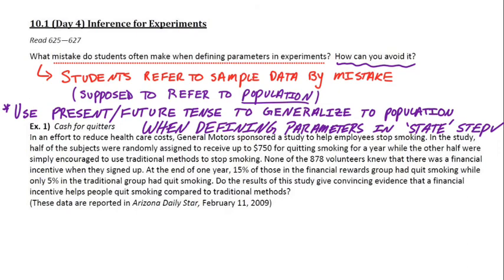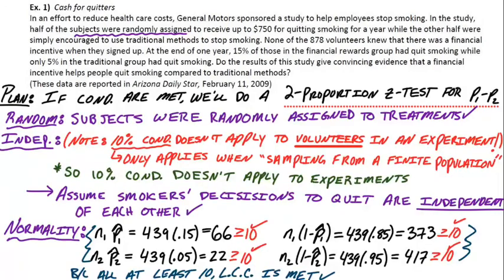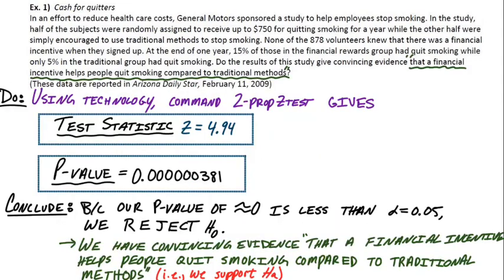Just remember that for experiments, when defining parameters at the beginning, use present or future tense to talk about population parameters and generalize to the population. Don't use past tense because then you're automatically referring to the sample data. Say 'smokers who would quit' versus 'smokers who quit.' Also, since we just had volunteers sign up and didn't randomly sample from a population, the 10% condition doesn't apply to experiments. For independence, just make a statement that smokers' decisions to quit are independent of each other — they have no influence on one another. These inferences for experiments also apply to confidence intervals.